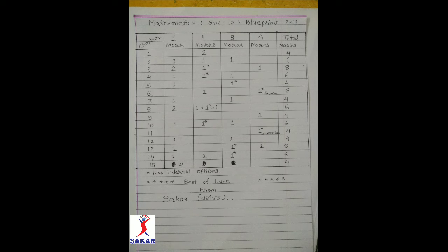Chapter 1: 2 questions of 2 marks each, total 4 marks. In Chapter 2: 1 question of 1 mark, 1 question of 2 marks and 1 question of 3 marks, total 6 marks. In Chapter 3: 2 questions of 1 mark, 1 question of 2 marks. Here you can also see the sign of a star — star means this question has an internal option. So in Chapter 3, the 2 mark question has an internal option.